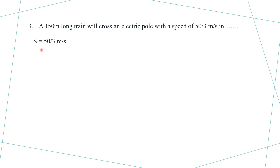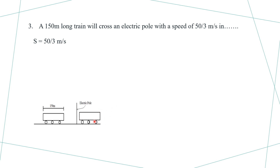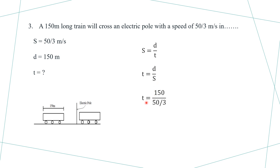Given: speed equals 50 by 3 meters per second. When a train crosses an electric pole, the distance covered is equal to the length of the train, which is 150 meters. Using the formula: speed equals distance divided by time, therefore time equals distance divided by speed.